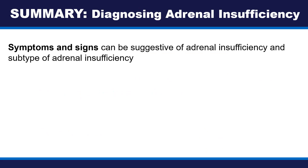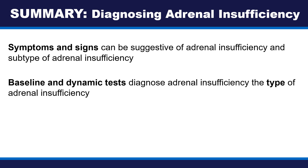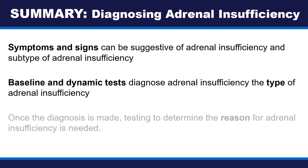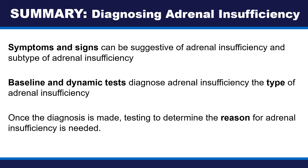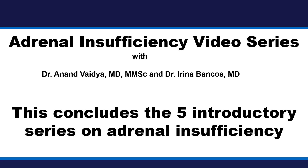In summary, symptoms and signs can be suggestive of adrenal insufficiency and also suggestive of the subtype. Both baseline and dynamic tests can be used to diagnose adrenal insufficiency. Baseline tests including ACTH can be used to diagnose the type. Once a diagnosis is made, testing to determine the reason for adrenal insufficiency is needed in all patients. This concludes the five-part introductory series on adrenal insufficiency.